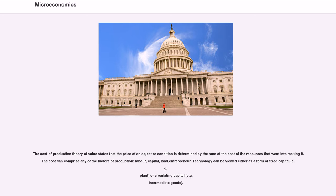Technology can be viewed either as a form of fixed capital, e.g. plant, or circulating capital, e.g. intermediate goods.